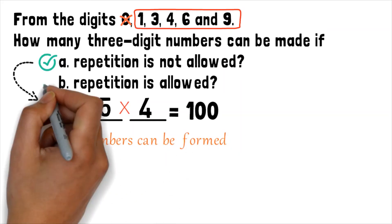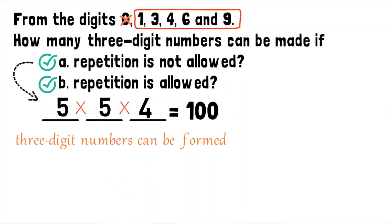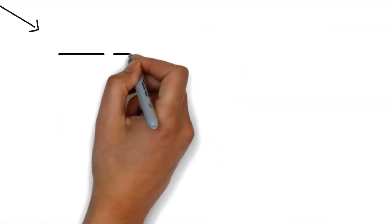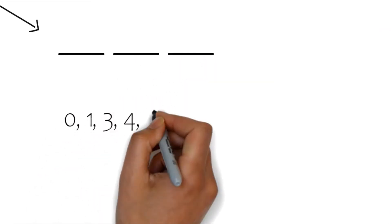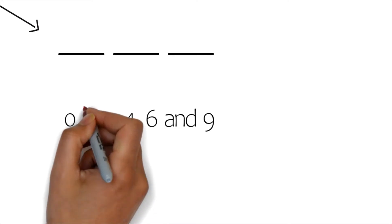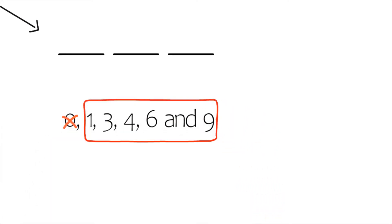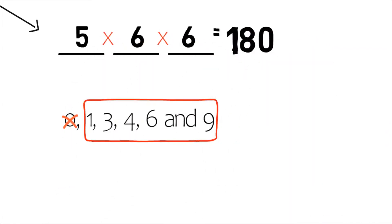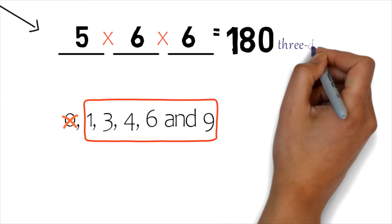For part B, if repetition is allowed: there are 3 positions to be filled and we draw 3 horizontal marks. On the first mark, you only have 5 choices because the zero digit cannot be placed in the hundreds place. After the first mark is filled by a non-zero digit, you have 6 choices for the second mark because repetition is allowed and you can include zero. On the third mark, you also have 6 choices. Multiplying gives a final answer of 180, so there are 180 three-digit numbers that can be formed.